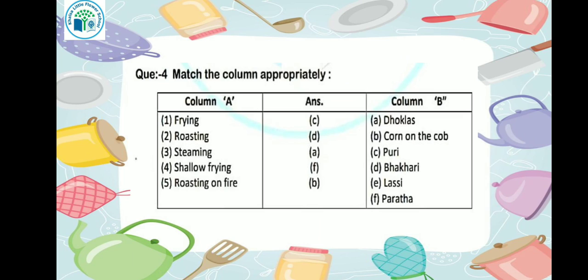Next is shallow frying. Kids, what is shallow frying? As I told you, it uses a little less oil to make something. Parada is made by shallow frying — we don't use as much oil as we use for puris. So our answer here will be option F.